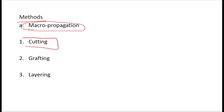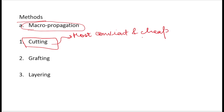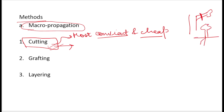The first method is cutting. Cutting is the most convenient and cheap method. It is the most commonly used technique in macro propagation for forest plants. We cut a part of the plant and plant it, the roots will develop, and this plant will grow.